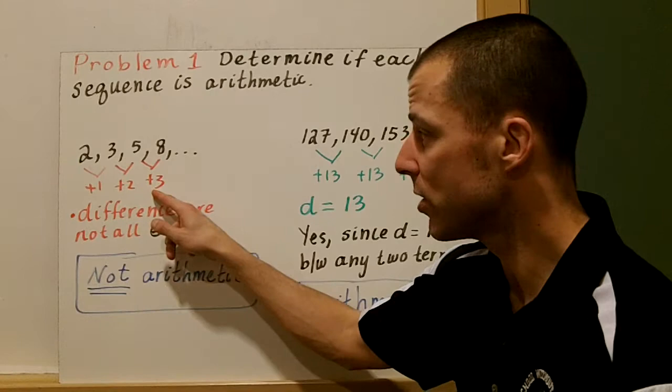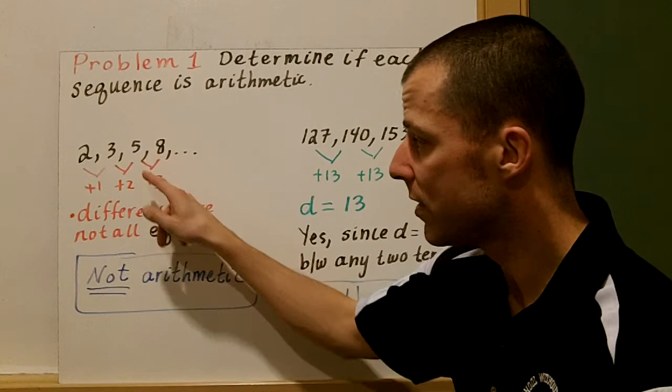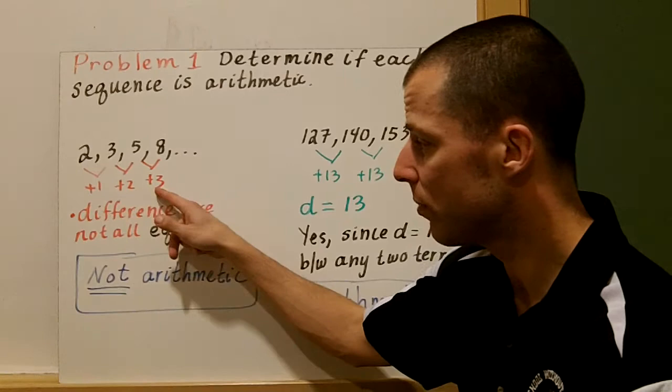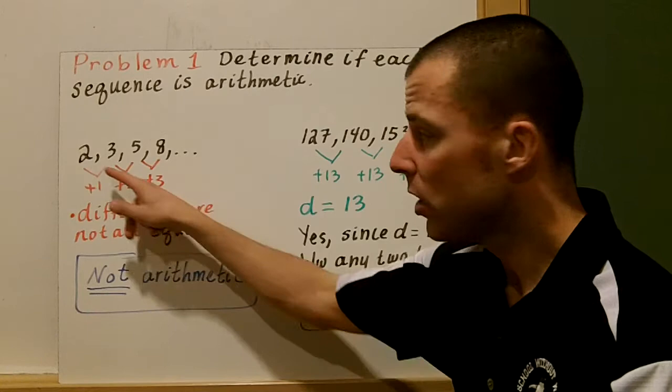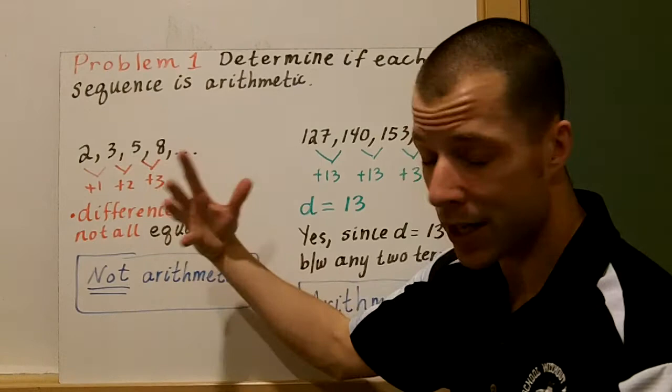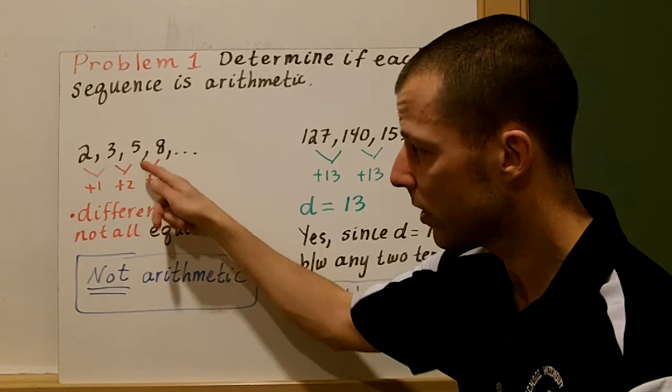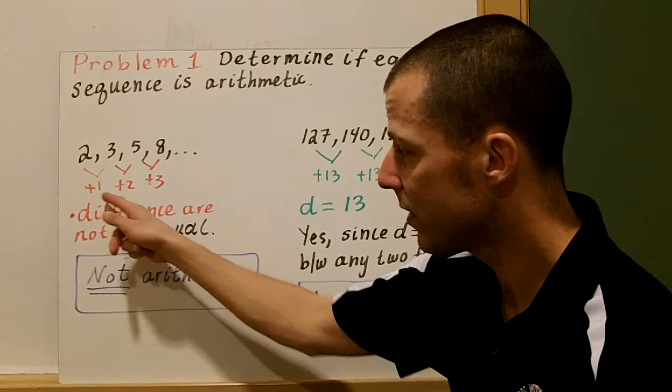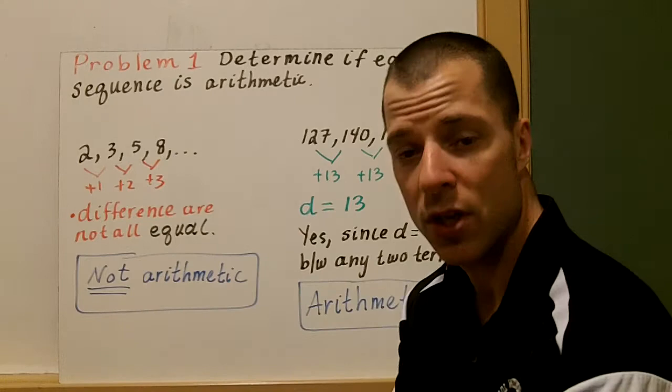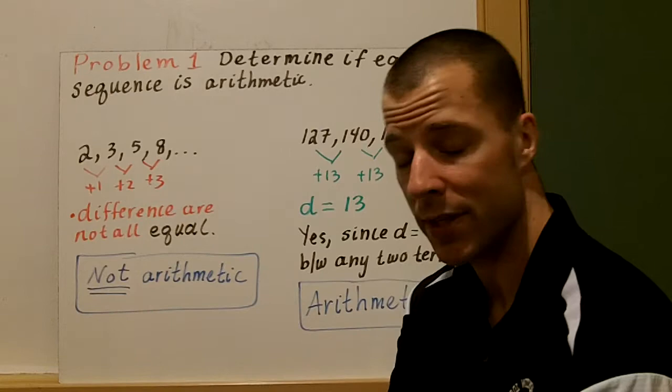You could subtract: 3 minus 2 is 1, 5 minus 3 is 2, and 8 minus 5 is 3. So the common difference here is not the same. If it were the same, we would have the same number at each of those three spots. This sequence is not arithmetic because the common difference is not the same.